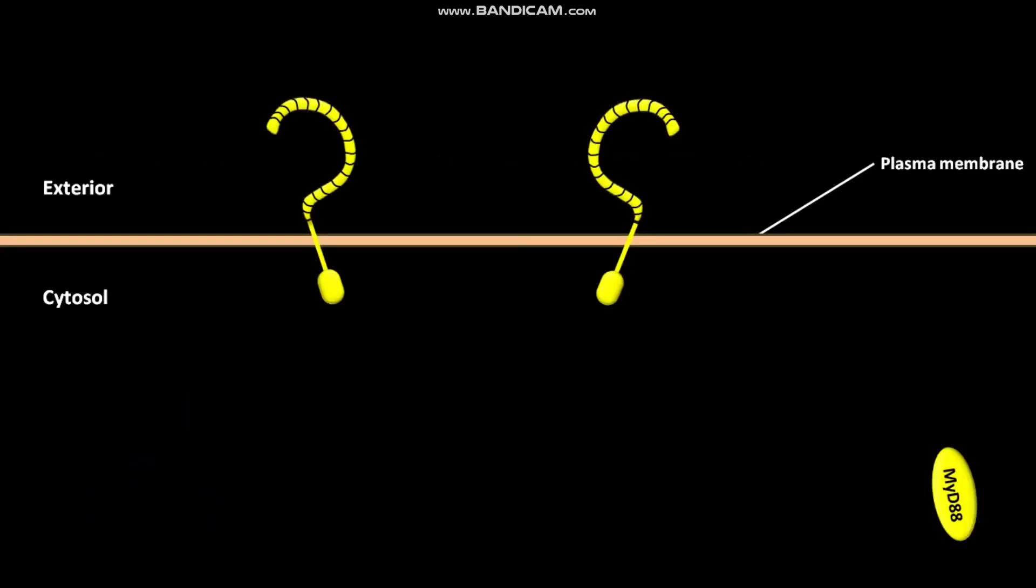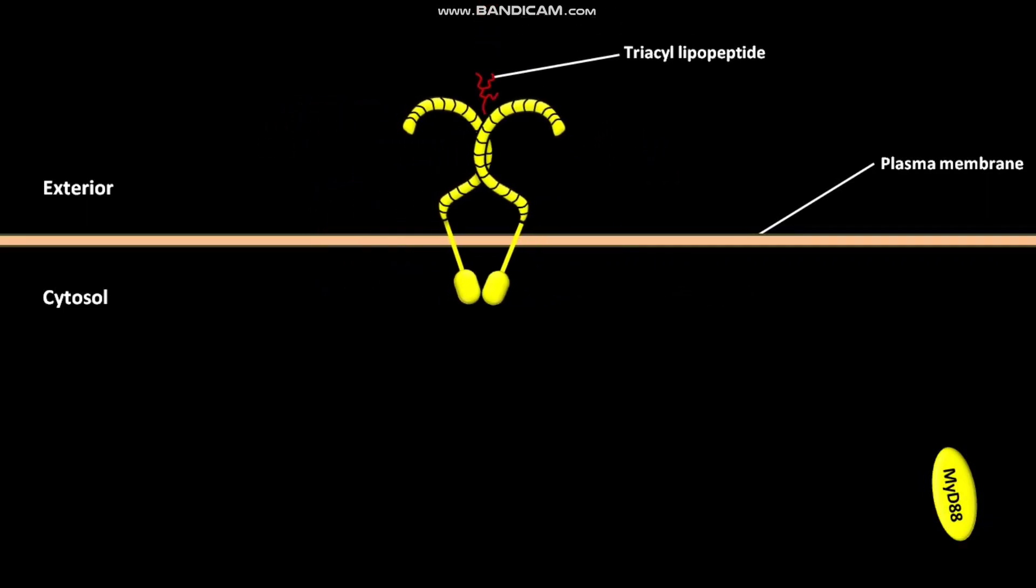The plasma membrane of a cell has both TLR1 and TLR2. Both TLR1 and TLR2 have one TIR domain each. A bacterial triacyl lipopeptide binds to TLR1 and TLR2. This binding forms a dimer of TLR1-TLR2.